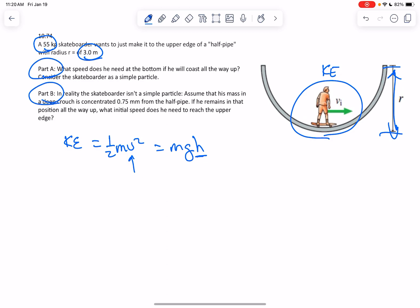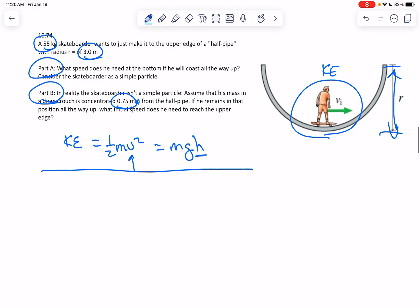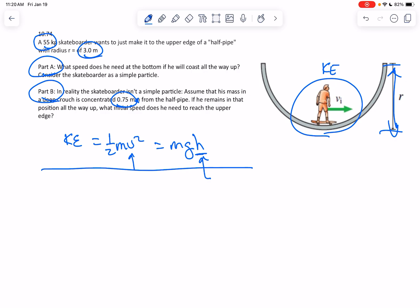In part B, it says he's actually in a crouch, and his center of mass is 0.75—I should say meters—meters above. So you'll do the exact same thing—you just change what the h is. Instead of it being 3 meters,